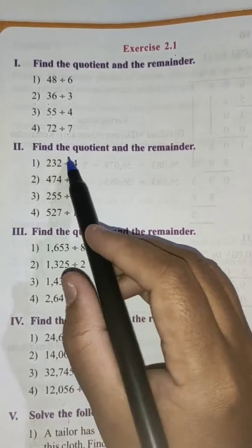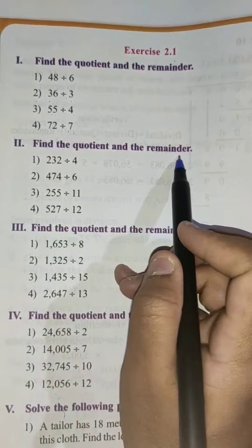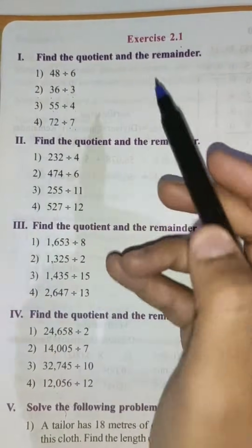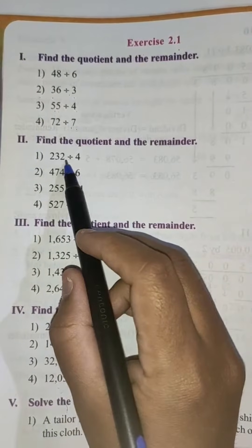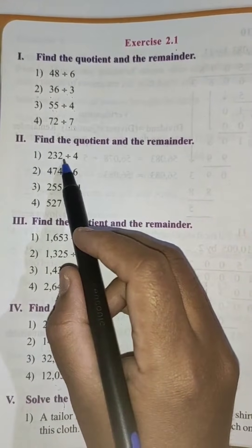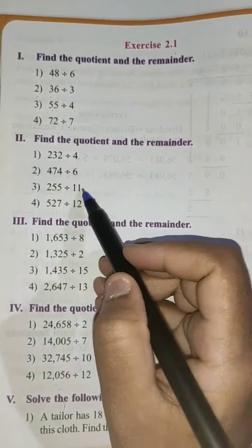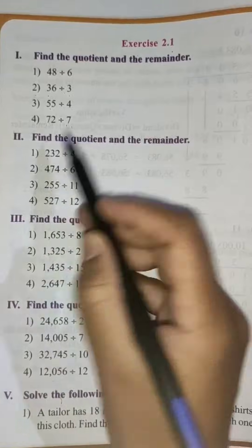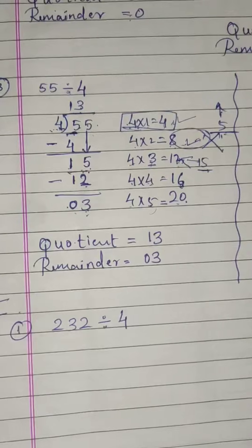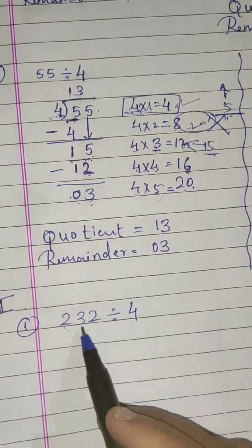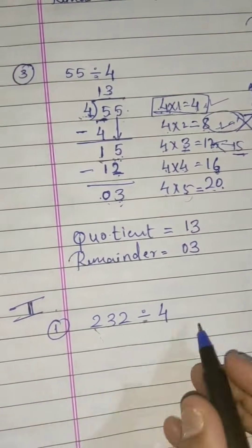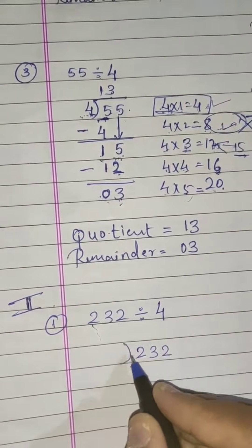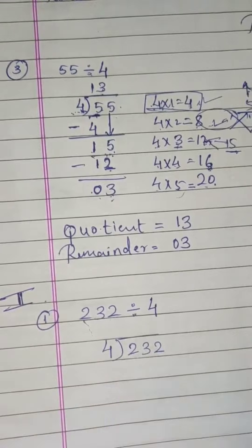Here we need to find the quotient and the remainder. So here you can see we have done problems using two-digit numbers. Now we are going to take three-digit numbers and divide by a one-digit or two-digit number. We will take the first example: 232 divided by 4. So let's write it — 232 divided by 4.